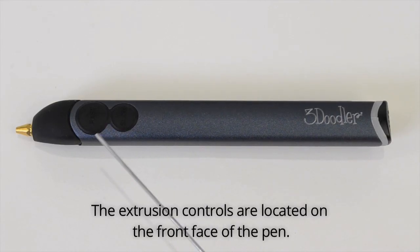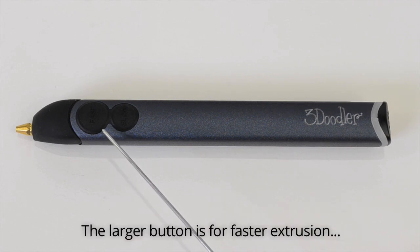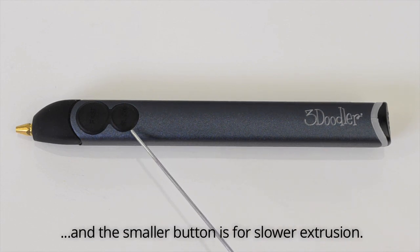The extrusion controls are located on the front face of the pen. The larger button is for faster extrusion, and the smaller button is for slower extrusion.